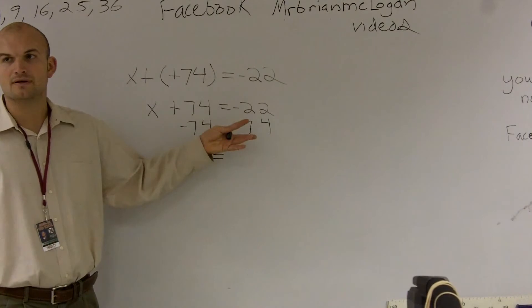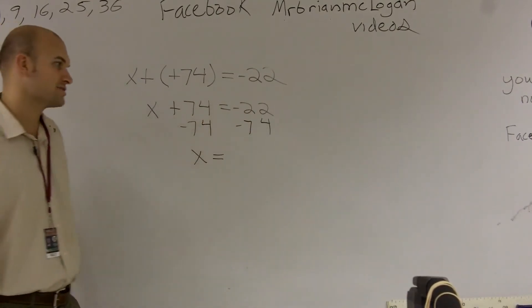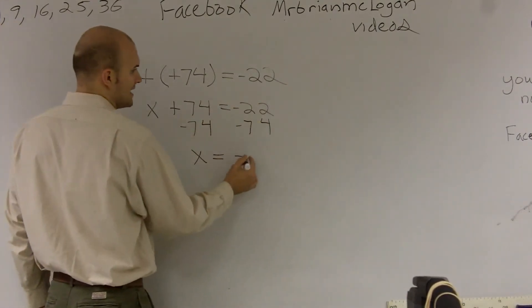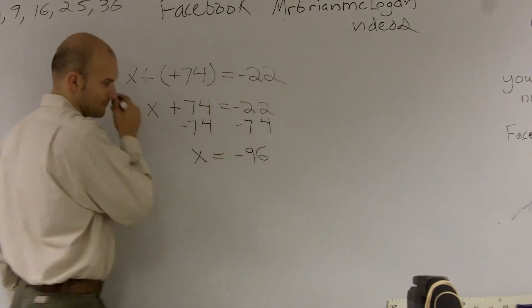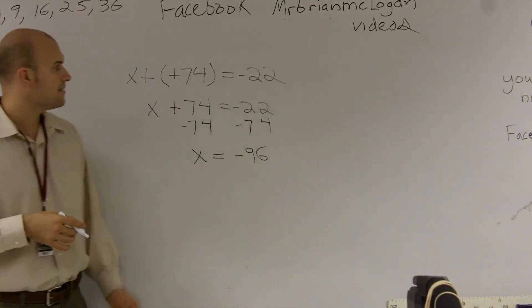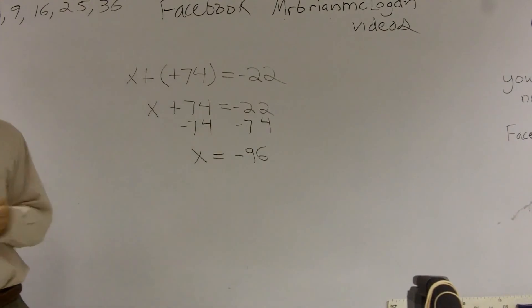Remember, if they're both negative, you can just add them up and you know your answer's going to be negative. So that would be a negative 96. So that's how you solve that problem when you have two negatives right next to each other.